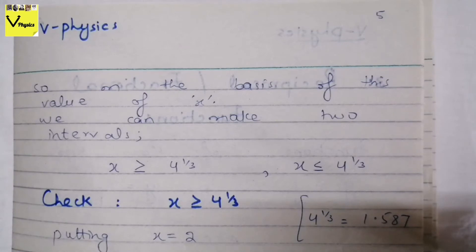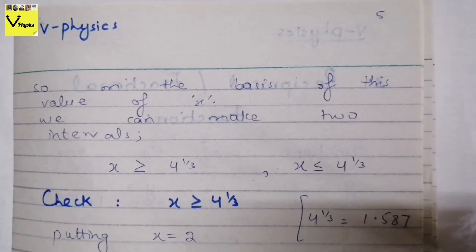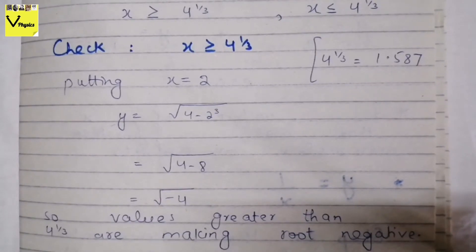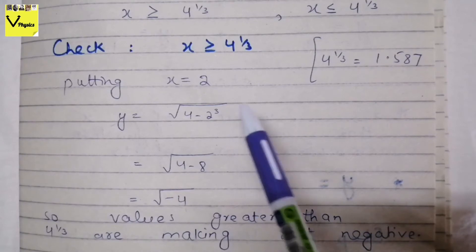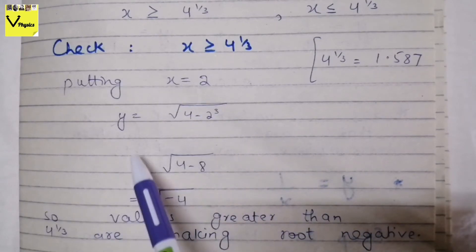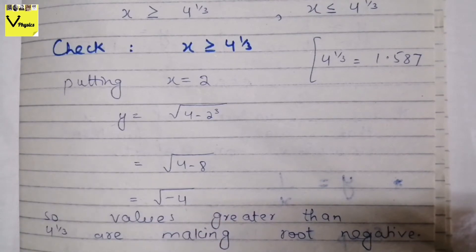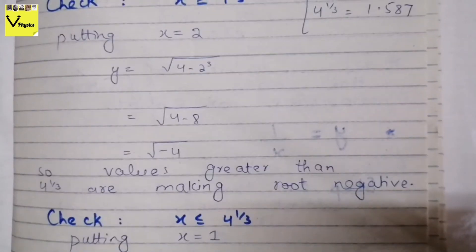We have divided the set of real numbers into two branches: one with values greater than or equal to 4^(1/3), and the other with values less than or equal to 4^(1/3). Now we check which interval makes the function infinite or complex, and remove that interval. For the interval x ≥ 4^(1/3), we put x = 2 in the original function: 4 − (2)³ = 4 − 8 = −4, giving √(−4), which is complex. So all values greater than 4^(1/3) make the root negative.